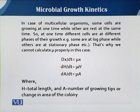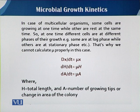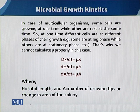In the case of multicellular organisms, some cells are growing at one time while others are at rest at the same time. At any one time, different cells are at different phases of their growth — some are at log phase while others are at stationary phase. That is why we cannot calculate mu properly in that case.